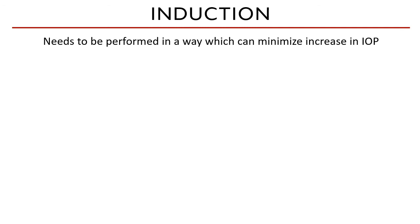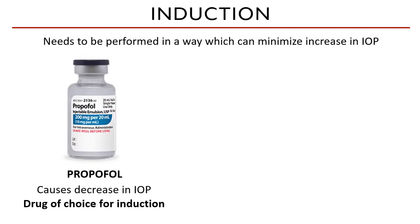Induction drugs need to be administered in a way that minimizes the tendency of the IOP to increase during surgery. Propofol is the drug of choice for ophthalmic surgeries because of its effect to decrease IOP. It can provide a rapid, smooth, and excitement-free onset of general anesthesia, but its duration is short — ranging from only 3 to 9 minutes. It is usually administered through a slow IV bolus to avoid apnea, followed by intubation and inhalational anesthetic as maintenance. Recovery after propofol is also very rapid and excitement-free. Etomidate also decreases IOP, but it causes myoclonus, so it is not advised.